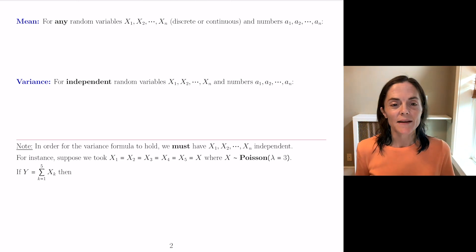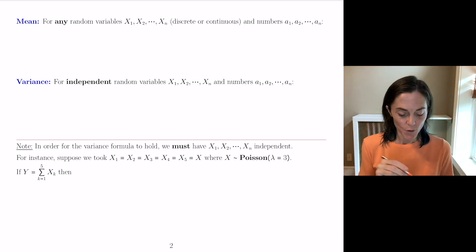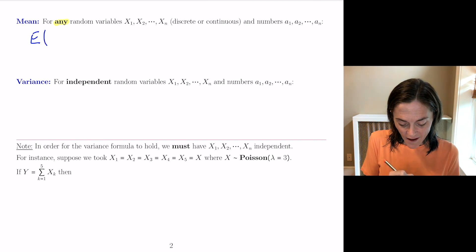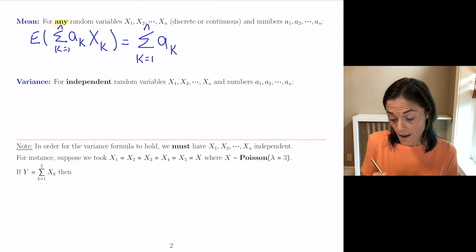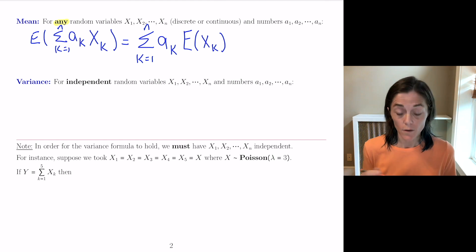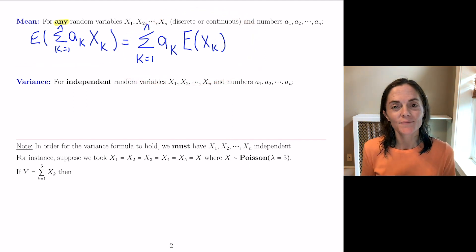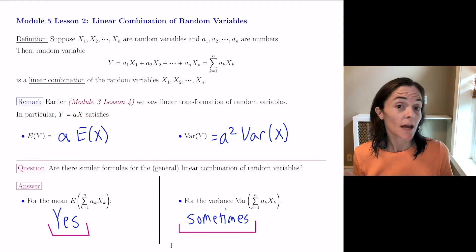For the mean, we have any discrete or continuous random variables x1 through xn, and numbers a1 through an. The word 'any' is important here — we don't have any restrictions on x1 through xn. The expected value of the sum, k equals 1 to n of ak·Xk, equals the sum of ak times the expected value of Xk. This is the beautiful linearity of the expected value. With n equals 1, it reduces exactly to the earlier formula — it really generalizes to a general linear combination.